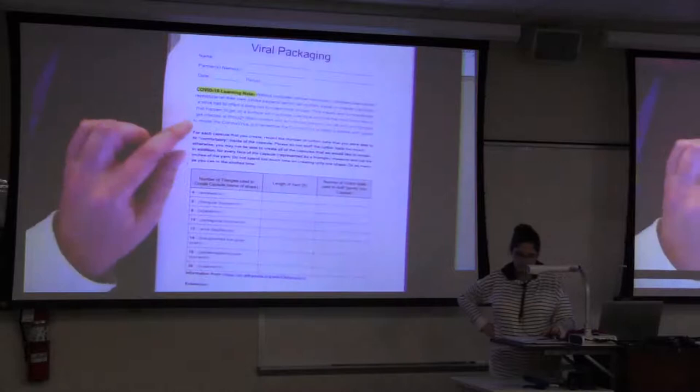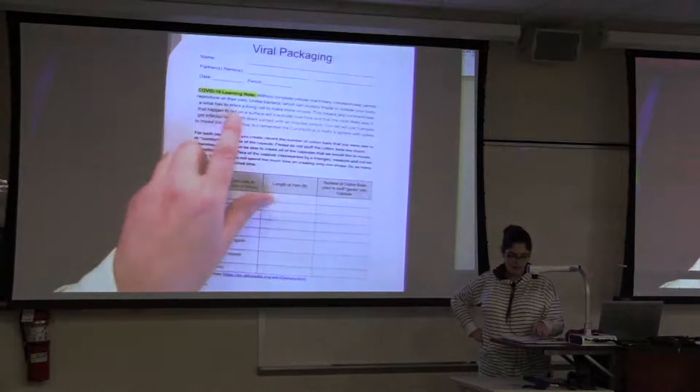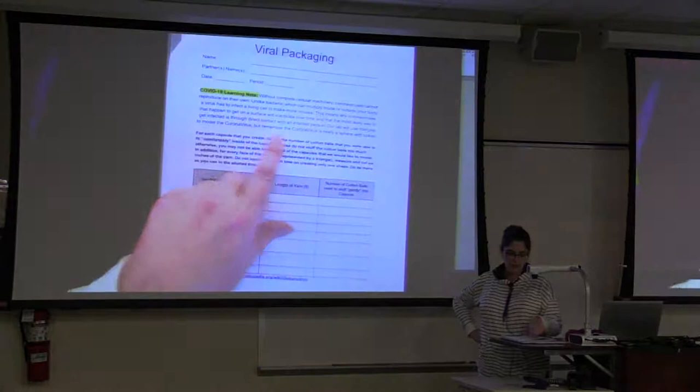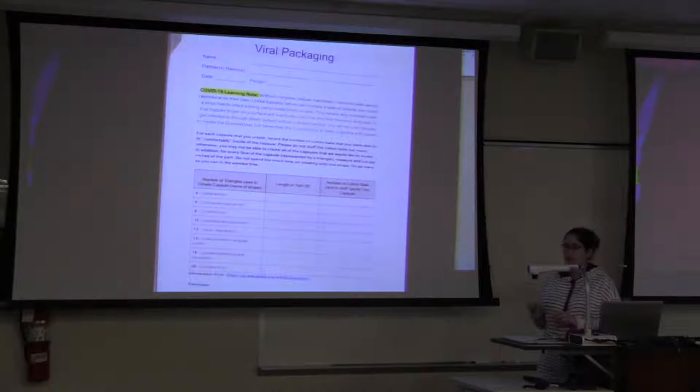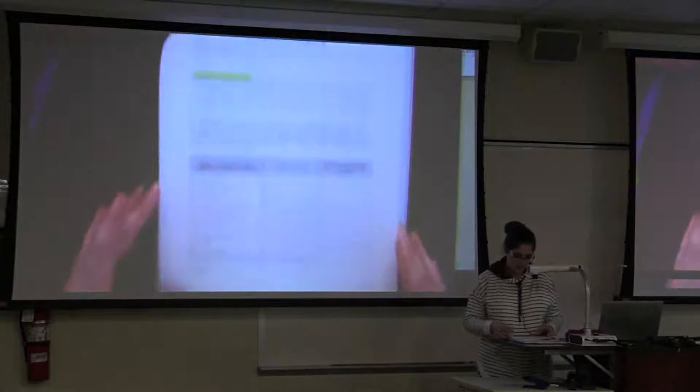Here's a little alerting note that I added in this one. Without complete cellular machinery, coronaviruses cannot reproduce on their own. Unlike bacteria, which can multiply inside or outside your body, a virus has to infect a living cell to make more viruses. This means any coronaviruses that happen to get on a surface will inactivate over time and that the most likely way to get infected is through direct contact with an infected person. So, this activity that we're going to be doing is with a triangle to model the coronavirus. It's not exactly like the coronavirus and kind of like they were talking about. There's many different versions of the virus that they're trying to replicate and study. And we're just going to do our own version.